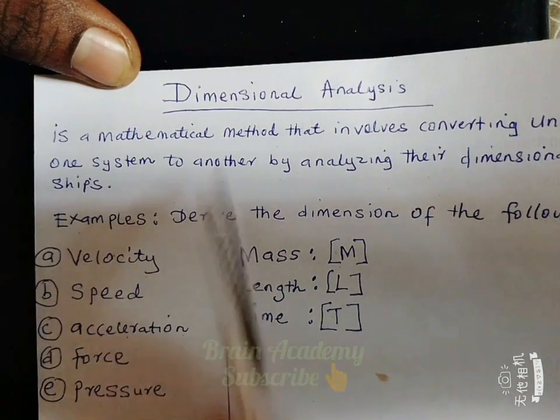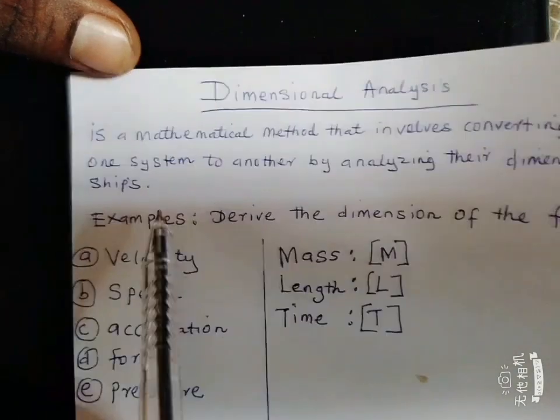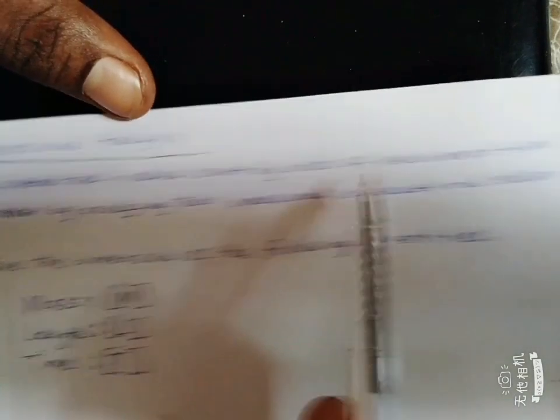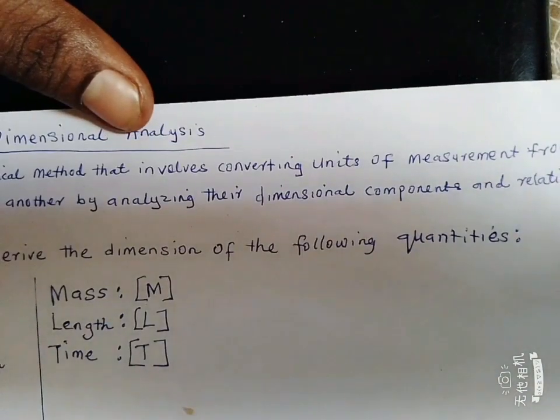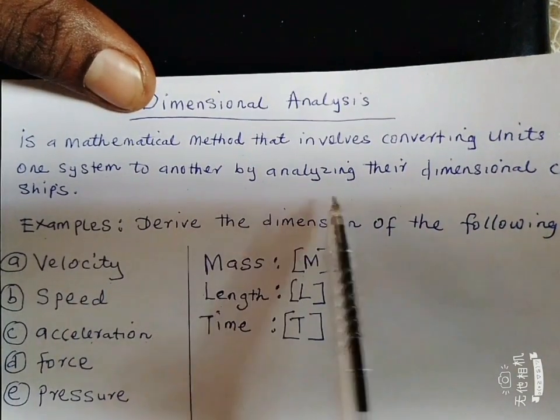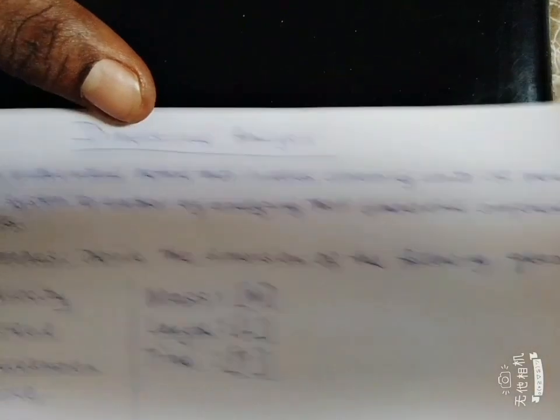Today we are going to look at dimensional analysis. Dimensional analysis is a mathematical method that involves converting units of measurements from one system to another by analyzing their dimensional components and relationships.